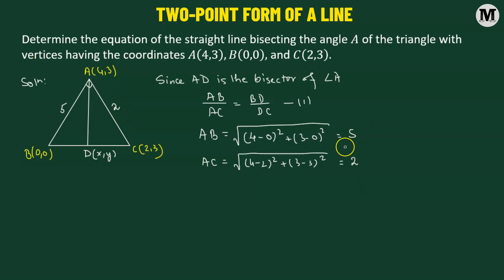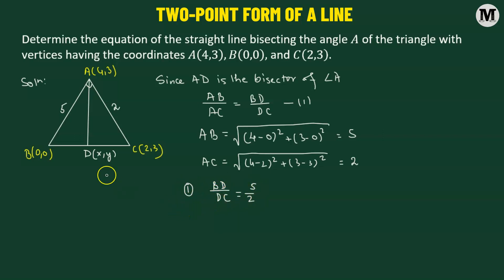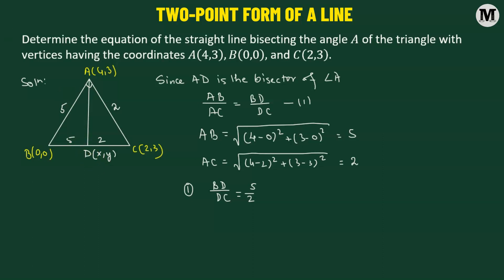If we substitute these two values into equation 1, then we get BD to DC in the ratio 5 to 2. In other words, we can say that point D divides BC in the ratio 5 to 2, which means we can easily find out the coordinates of D by using the internal section formula.